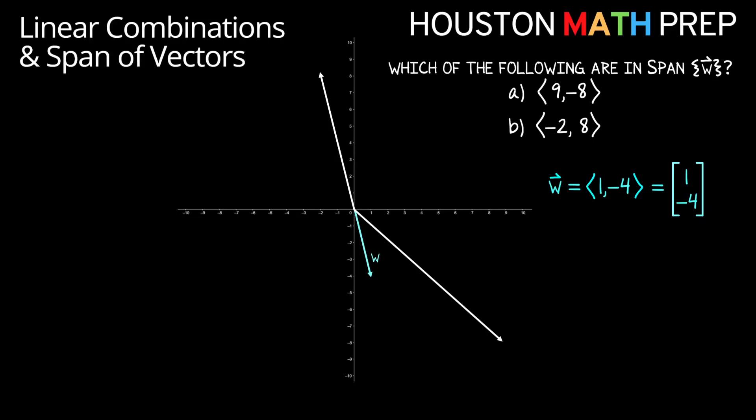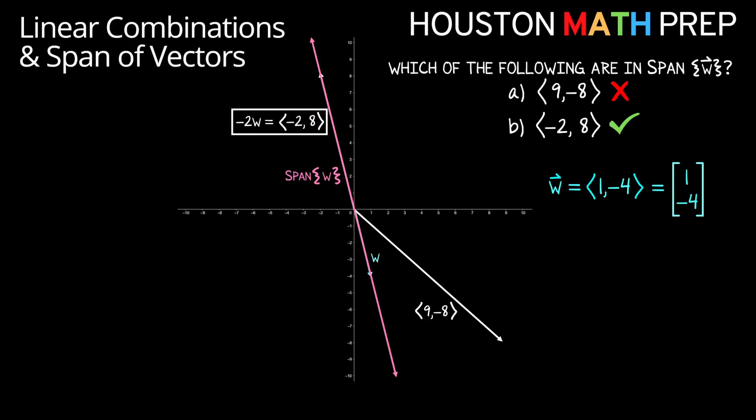Let's take a look at a different vector. Here we've got a new vector w that is 1 comma negative 4. We can look at this image and answer which of the following is in the span of vector w. If we extend a line forever forward and backward in the direction of vector w, we can see that the vector negative 2 comma 8 is in the span of w, but the vector 9 comma negative 8 is not. The vector in the span of w is actually negative 2 times vector w. So the vector 9 comma negative 8 has been neither in the span of v nor in the span of w.